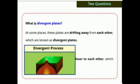These plates are divided into two categories: divergent plates and convergent plates. At some places, these plates are drifting away from each other, which are known as divergent plates. When tectonic plates move away from each other, they are known as divergent plates.